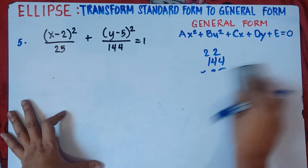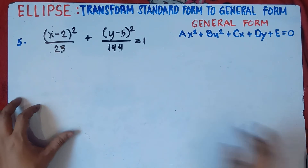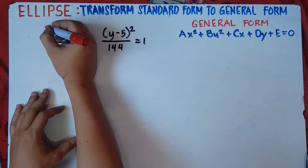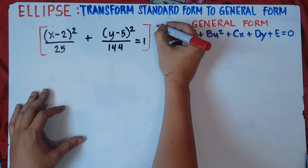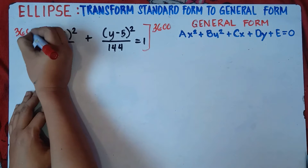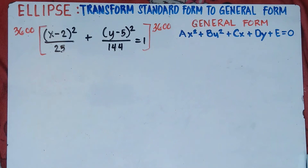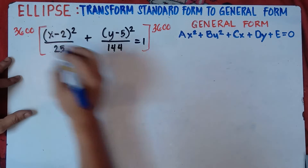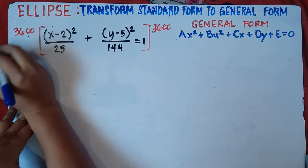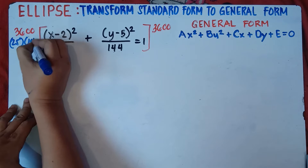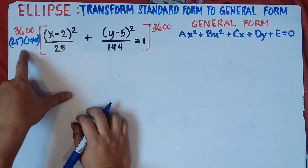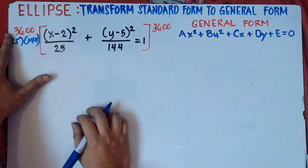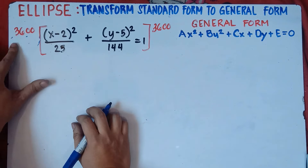So 25 times 144 is 3,600. We multiply the entire equation by 3,600. This will involve large numbers, so just bear with me. For 3,600, you can actually write it as 25 times 144 — that's the same thing. You can just copy the denominators or write 3,600; they are equivalent.